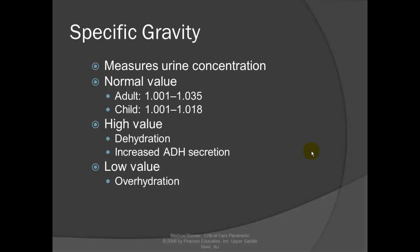Specific gravity reflects the concentration or thickness of the urine. Normal value for an adult is 1.010 to 1.035; for a child, 1.010 to 1.018. A high value indicates dehydration or increased antidiuretic hormone secretion. A low value results from over-hydration. When ADH — antidiuretic hormone — is secreted, it concentrates the urine by retaining as much water as possible.